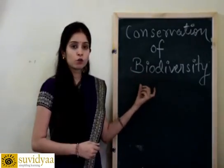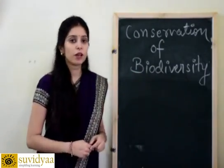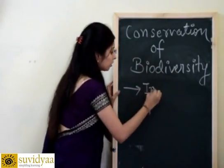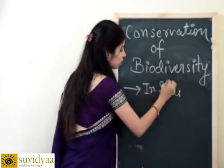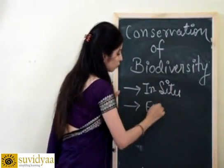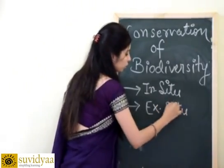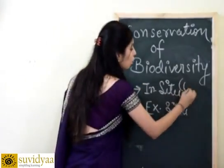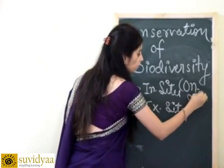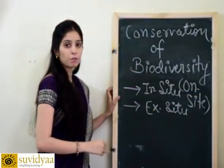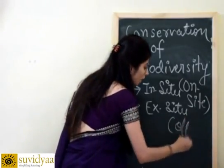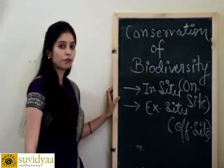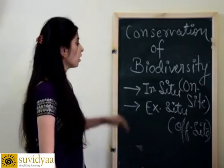So what methods are used for the conservation of biodiversity? Mainly two methods are used. The first method is called in-situ conservation and the second is called ex-situ conservation. In-situ conservation is also called on-site conservation, and ex-situ conservation is also called off-site conservation.